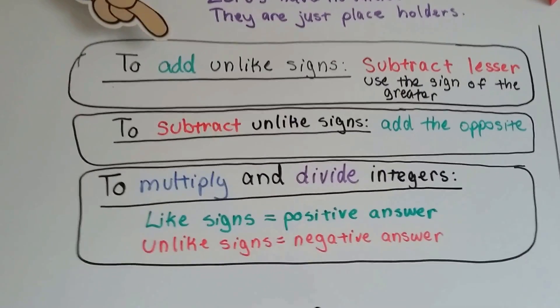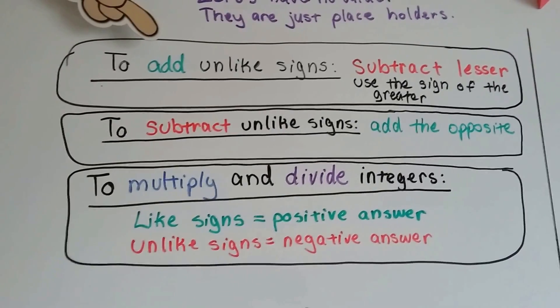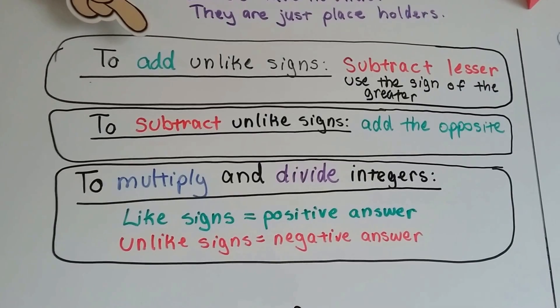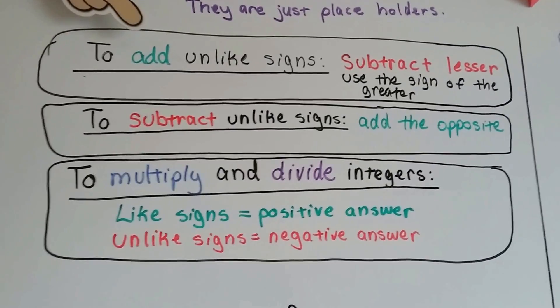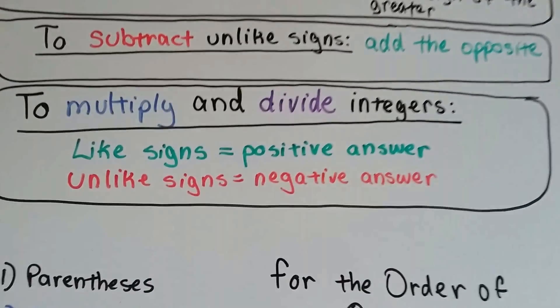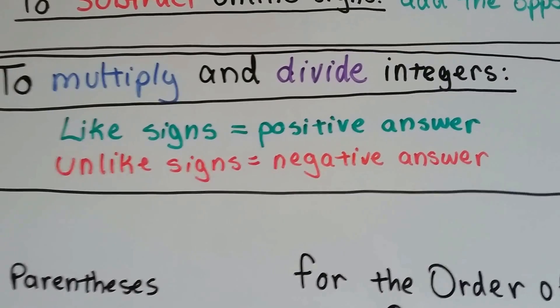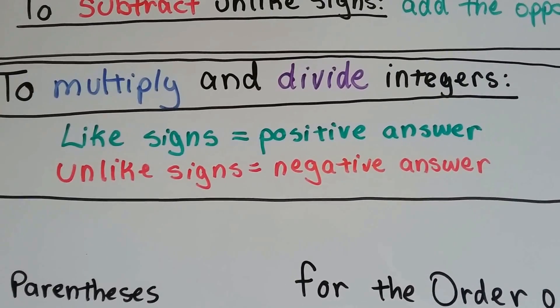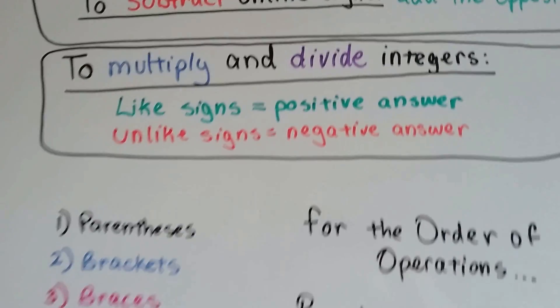I want you to really remember that when you add unlike signs, you just subtract the lesser value and use the sign of the greater one. And to subtract unlike signs, we add the opposite. And when we multiply and divide in integers, the like signs make a positive answer and the unlike signs make a negative answer.